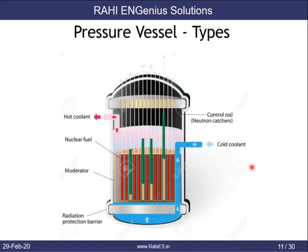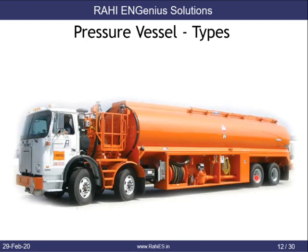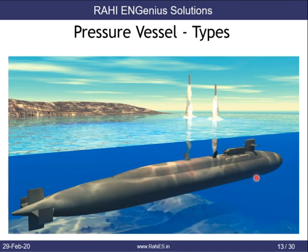A nuclear reactor is also a type of pressure vessel, and as mentioned earlier, all these vessels may not be covered by Division 1, but they are pressure vessels. Vessels in the sea — transport vessels, mobile vessels, or truck-mounted vessels — are also a type of pressure vessel. Nuclear submarines or any type of submarine are called pressure vessels because as a submarine goes deeper into the sea, it experiences external pressure on its outer surface.